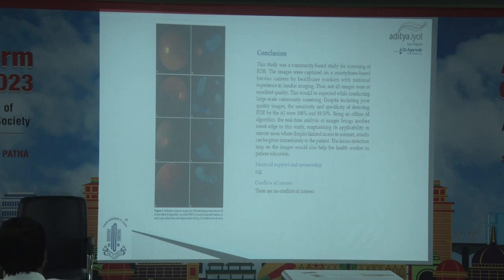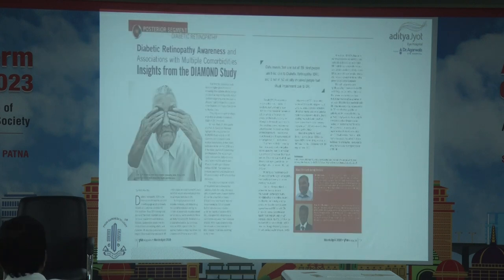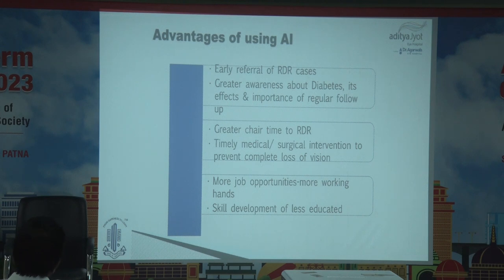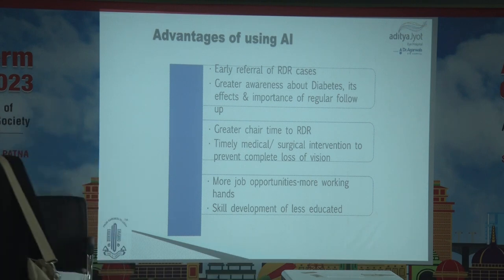The conclusion: this community-based study for screening of referable diabetic retinopathy captured images on a smartphone. Despite including poor-quality images, the sensitivity of detecting referable diabetic retinopathy by AI was 100% and specificity was 89.5%. Being an offline AI algorithm, real-time analysis of images brings a novel edge to the study, still one of the best-quoted studies worldwide because everybody else is working on internet-based systems — Google, Microsoft. I'm glad we are ahead of them. Advantages of using AI — whether offline or online: early referral of referable diabetic retinopathy, greater awareness of diabetes and its effects, importance of regular follow-up, timely medical-surgical intervention to prevent complete loss of vision, more job opportunities, more working hands, and skill development of the less educated.